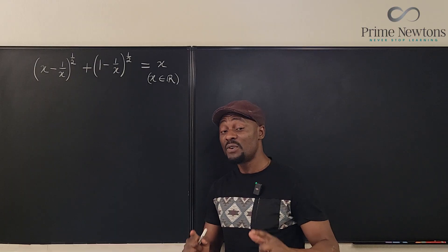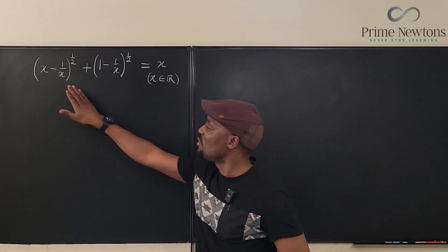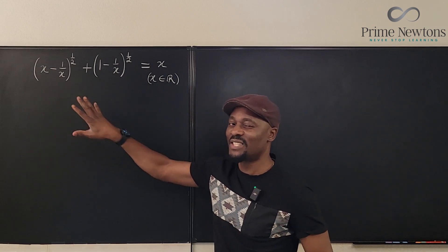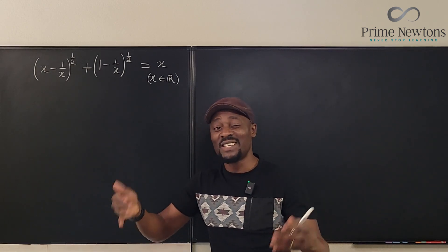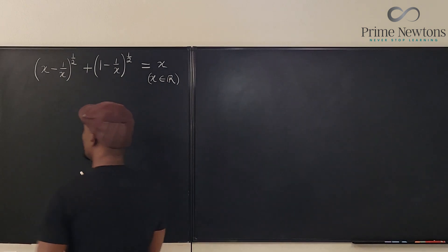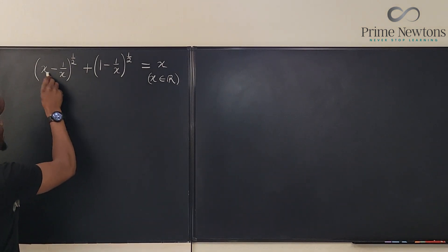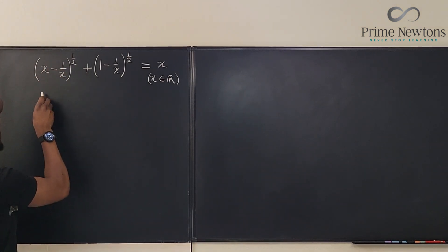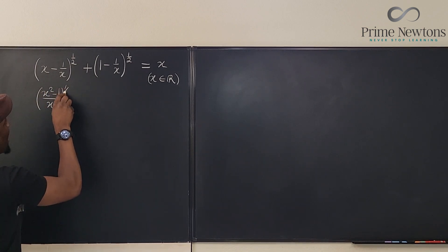My first move will be to rewrite the inside, because having double binomials is intimidating. I want to make it a single term. I'm going to combine this into a single fraction: x times x gives x squared minus 1, all over x, raised to the power of one half.